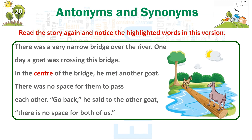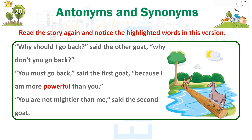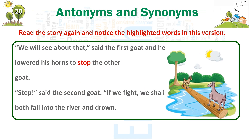Read the story again and notice the highlighted words in this version. There was a very narrow bridge over the river. One day, a goat was crossing this bridge. In the center of the bridge, he met another goat. There was no space for them to pass each other. 'Go back,' he said to the other goat. 'There is no space for both of us.' 'Why should I go back?' said the other goat. 'Why don't you go back?' 'You must go back,' said the first goat, 'because I am more powerful than you.' 'You are not mightier than me,' said the second goat. 'We will see about that,' said the first goat, and he lowered his horns to stop the other goat.